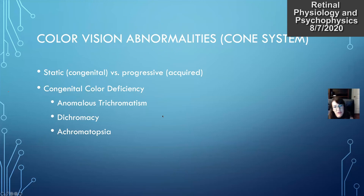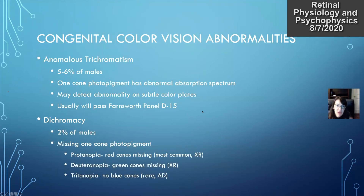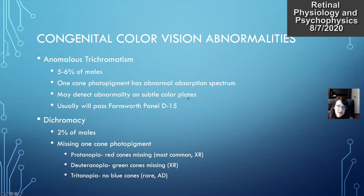Congenital color vision deficiencies include anomalous trichromatism, dichromacy, and achromatopsia. With anomalous trichromatism, patients have an abnormal absorption spectrum in one of their photopigments and use different proportions of the primary colors to determine color hues. This is the most common color vision abnormality, affecting 5% to 6% of males. They can be detected on subtle color plates and the Farnsworth Panel 100, but will usually pass the Farnsworth Panel D15 because their color vision deficiencies tend to be more subtle. These patients function very well and likely have little functional defect.